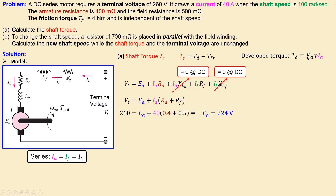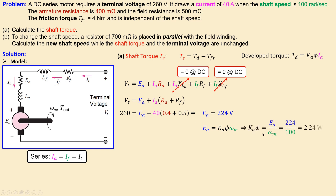We need the motor constant. From the back EMF expression, back EMF equals the motor constant times shaft speed. We know the shaft speed is 100 radians per second and we've calculated the back EMF as 224 volts, so we can rewrite the expression to get the motor constant: 224 divided by 100, which gives 2.24 volt-seconds per radian.